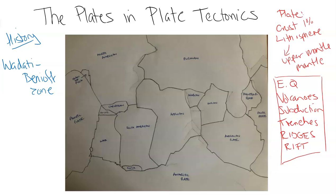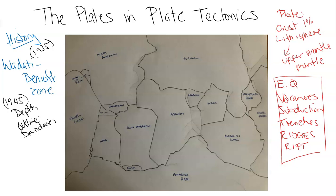But before that, a Japanese scientist, Wadati, in 1935, did some research and found the depth of earthquake foci that were consistently located around the edge of the continents. And then further research came from Benioff in 1945, where there was a greater understanding and scientific detail of these earthquakes in terms of depth, which started to outline the borders or boundaries of some of these major plates.